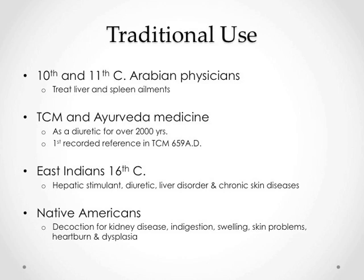Taraxacum officinale has played a great role in traditional herbal medicine. It has been used as a folkloric medicine for a diverse range of diseases. Arabian physicians first referred to the therapeutic use of dandelion during the 10th and 11th century to treat liver and spleen ailments. Traditional Chinese medicine and Ayurveda medicine employed the Taraxacum genus for over 2,000 years. The first recorded reference to dandelion in traditional Chinese medicine dates back to 659 AD. The East Indians used the common dandelion as a hepatic stimulant, diuretic, and to treat liver disorders and chronic skin diseases back in the 16th century.